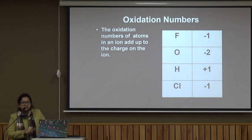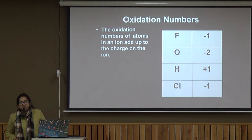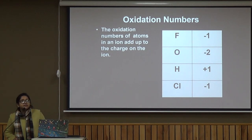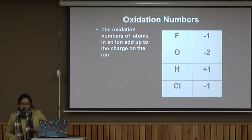What is the oxidation state of nitrogen in NH₄⁺? Hydrogen is in the plus 1 oxidation state, and there are 4 hydrogen atoms, giving a total of plus 4. For the overall ion to carry a plus 1 charge, nitrogen must be in the minus 3 oxidation state, since minus 3 plus plus 4 equals plus 1.